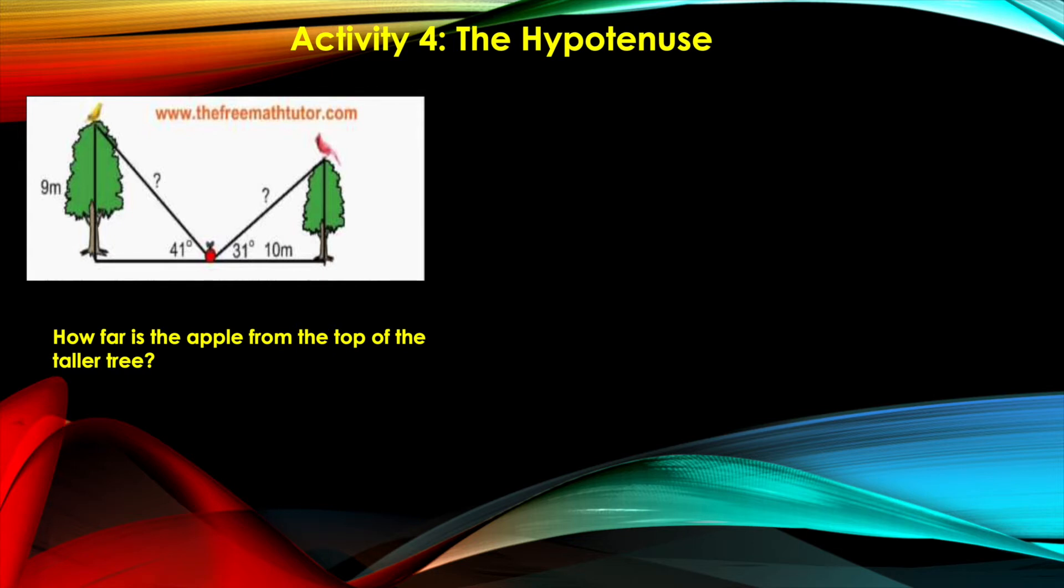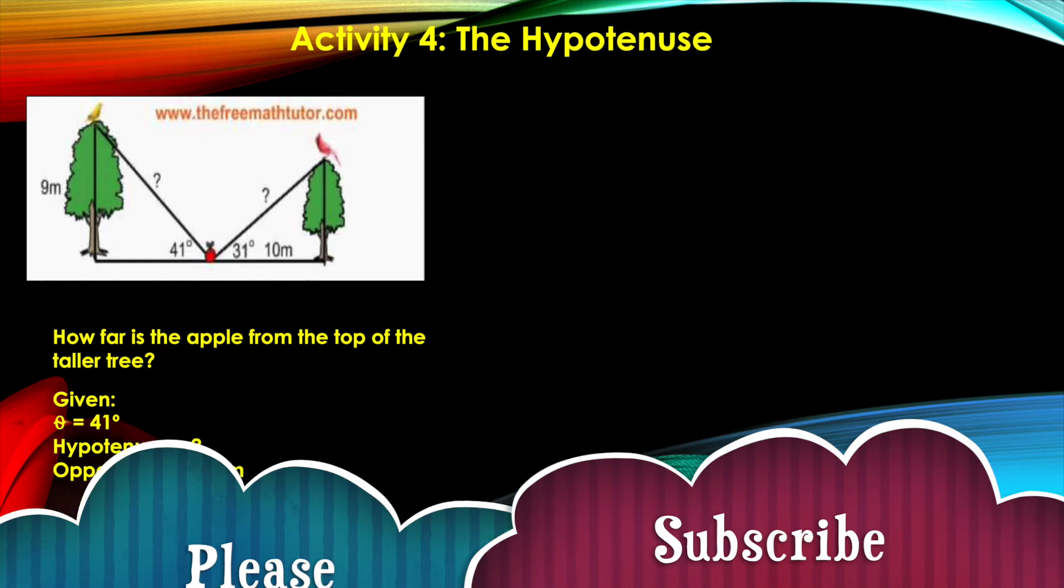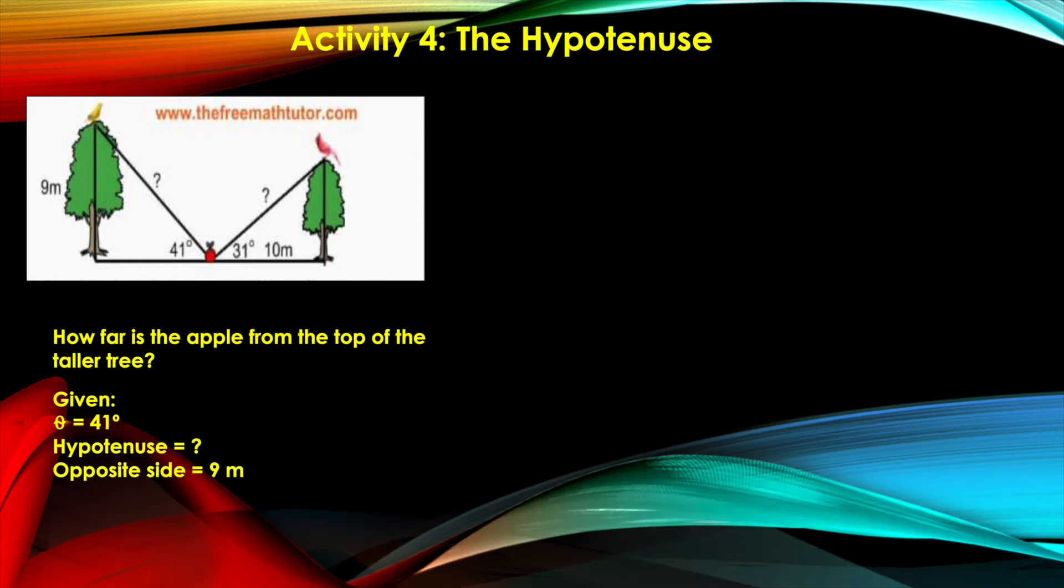What are the given information in the larger right triangle? The reference angle theta is equal to 41 degrees. The hypotenuse is unknown; that is what we are going to calculate. And the opposite side is given, represented by the height of the taller tree, which is 9 meters.